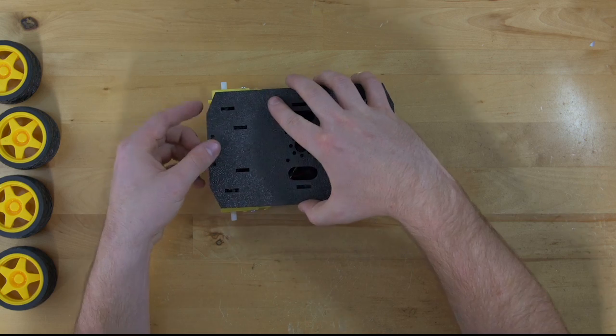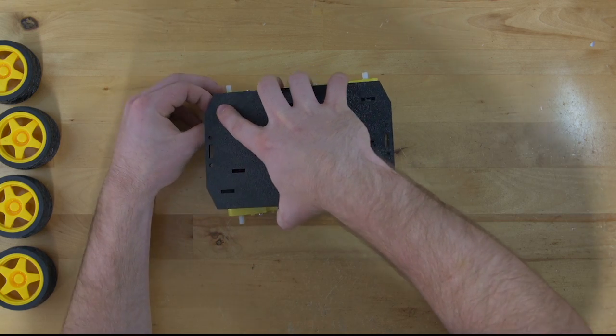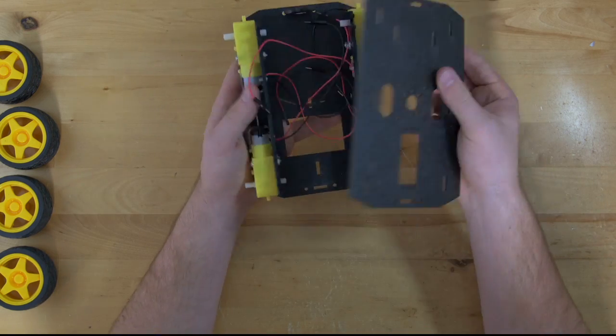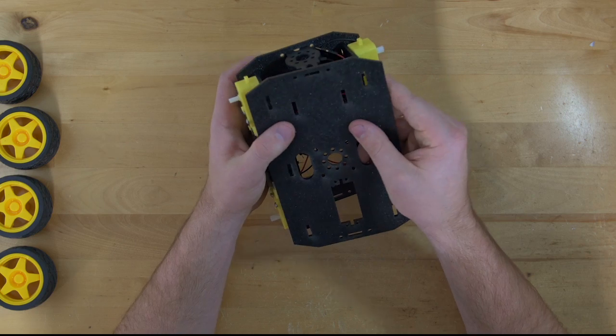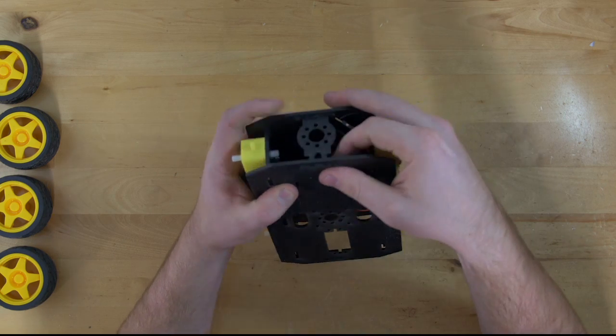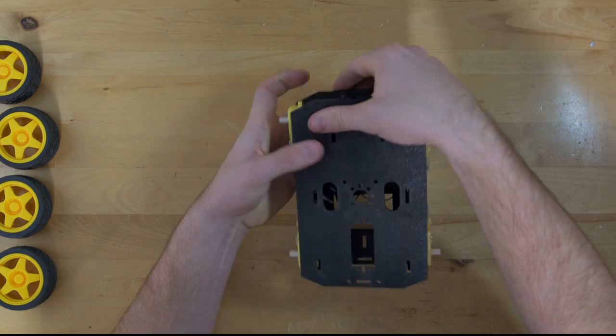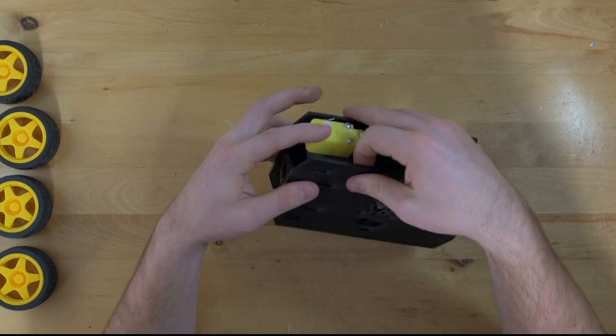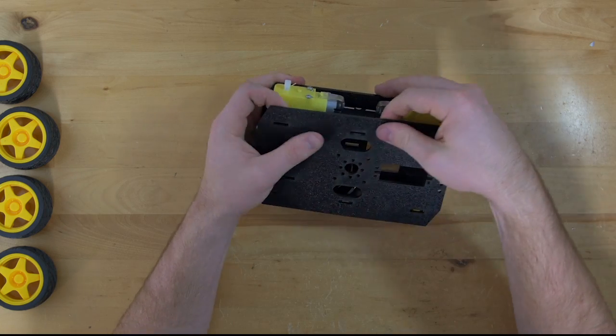You snap that in, it kind of depends on how you're going to be doing your project. I'm just going to go ahead and line the holes up on the same side. And then just one at a time, line up your snaps and snap them in.